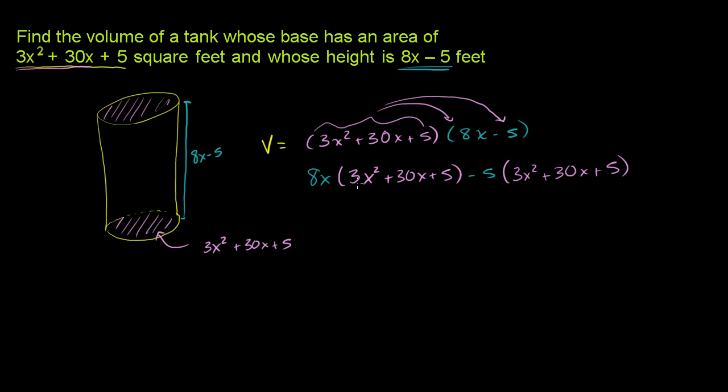So then we get 8x times 3x squared is 24x to the third power. 8x times 30x is what? That's 240x squared. So plus 240x squared. 8x times 5 is plus 40x.